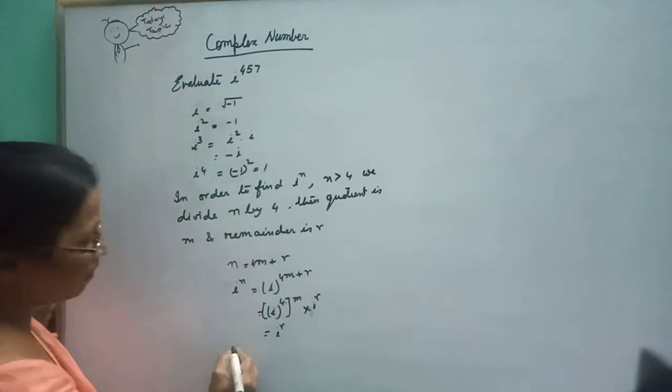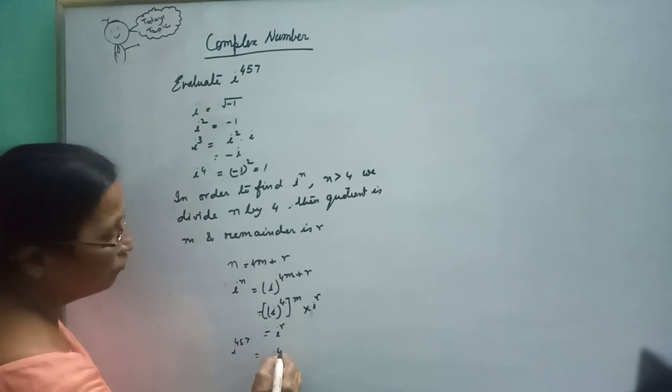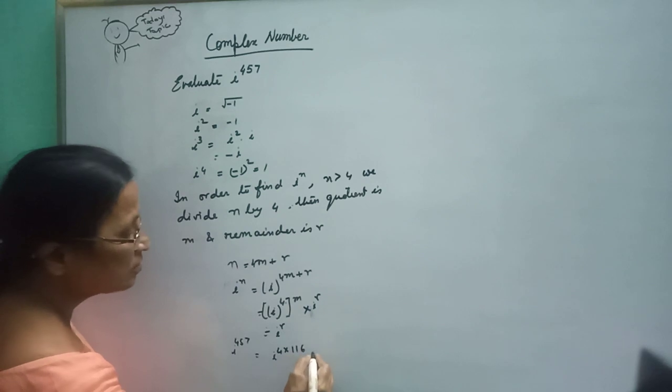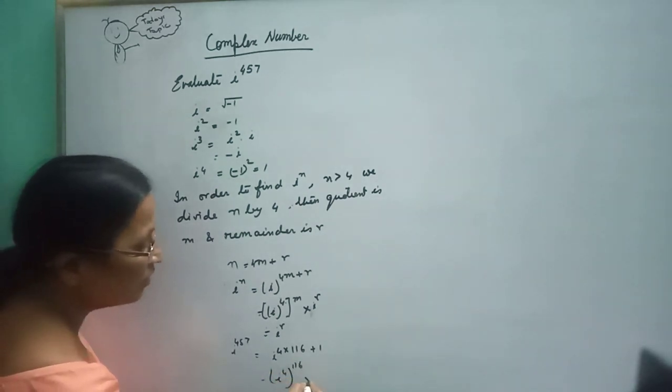Now here it is i to the power 457, so I can write this as i to the power 4 into 114 plus 1. This can be written as i to the power 4 raised to 114 into i to the power 1, so this is equal to i.